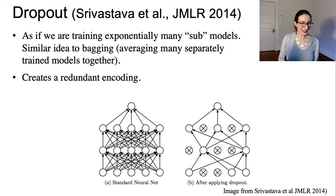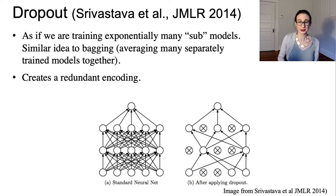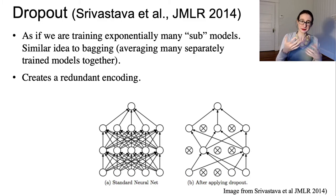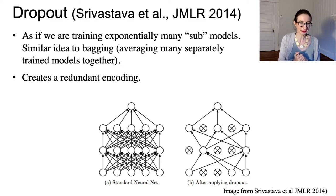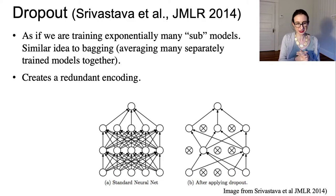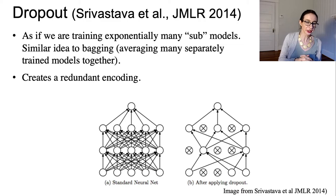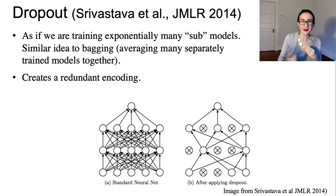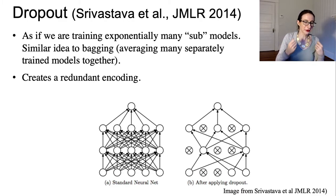You can think about this as training exponentially many sub-models, because the number of subsets of neurons is exponential in the number of neurons, and you're training all of these sub-models simultaneously. This is similar to bagging — bootstrap aggregating — where you do a combination of many different sub-models. It also creates a redundant encoding: information is encoded redundantly throughout the network since you're systematically ignoring neurons, forcing that information to be available from other sources.